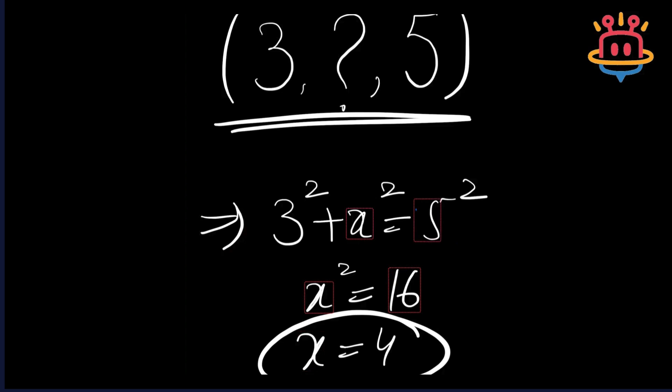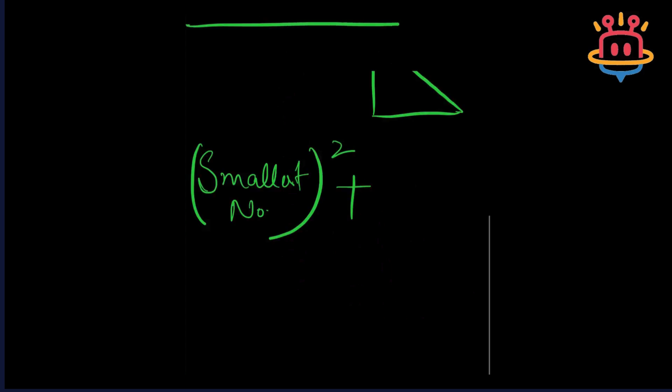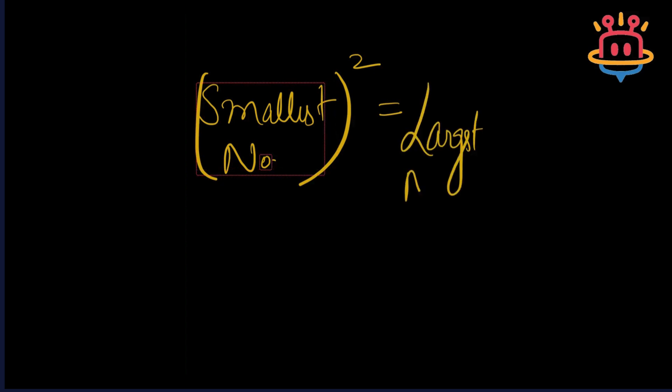Do you want to learn this secret trick? Come on, let's get started. Okay, so my dear friends, step number one is to understand the triplet formula. In a right-angled triangle, Pythagorean triplet follows this simple rule: smallest number whole square is equal to largest number whole square minus middle number whole square.